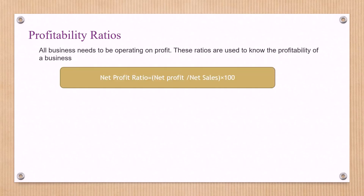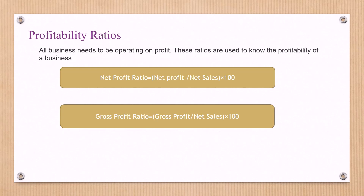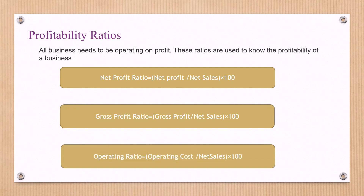The next formula is under the profitability ratio. Under profitability ratio, the net profit ratio formula is net profit divided by net sales (total sales) multiplied by 100. The gross profit ratio formula is total gross profit divided by net sales multiplied by 100. The next formula under profitability ratio is the net operating ratio: operating cost divided by net sales multiplied by 100.